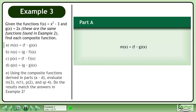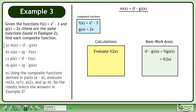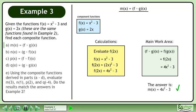In part a, we'll derive m equals f of g. Set up the workspace. We write f using regular function notation, then replace g with 2x. We need to evaluate f: we know that f equals x squared minus 3, so f of 2x equals 2x squared minus 3, which gives us 4x squared minus 3. The answer is m equals 4x squared minus 3.